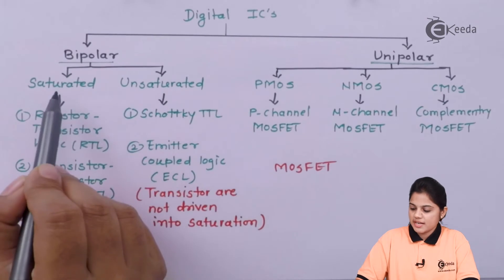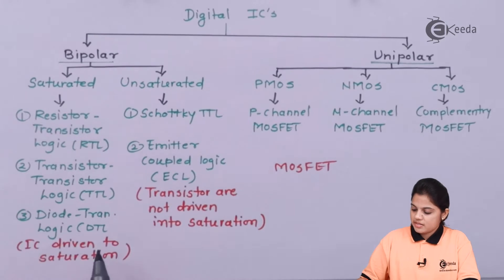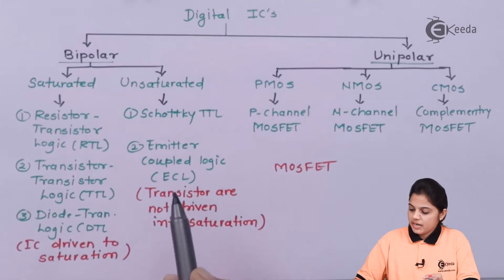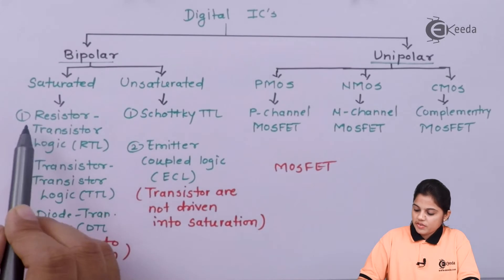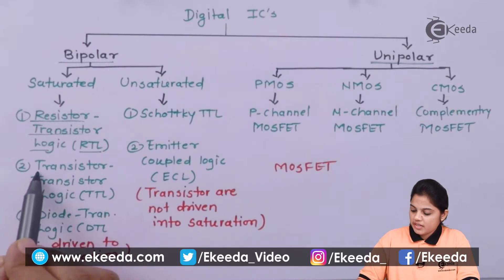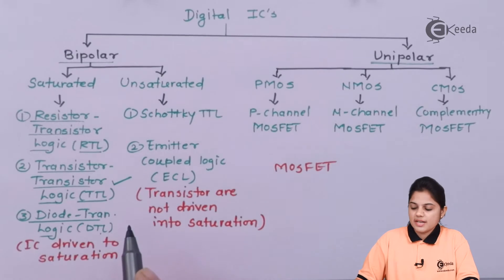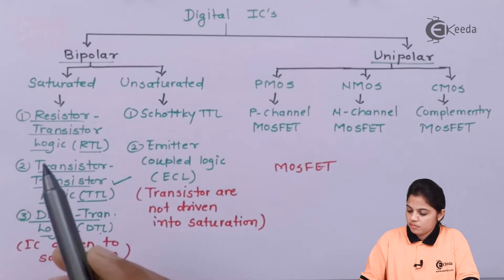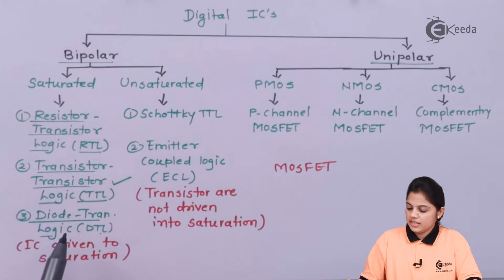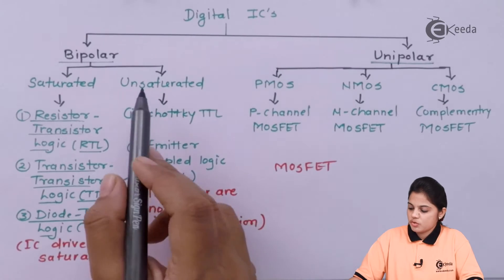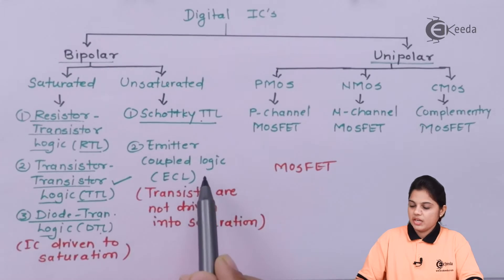Under bipolar, we have two types: saturated and unsaturated. In saturated, the IC is driven to a saturation level; in unsaturated, transistors are not driven into saturation. Under saturated, we have resistor-transistor logic (RTL), transistor-transistor logic (TTL), and diode-transistor logic (DTL). In our syllabus, we will study TTL in detail. Under unsaturated, we have Schottky TTL and emitter-coupled logic (ECL).